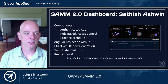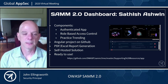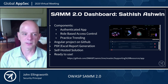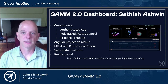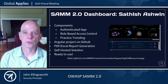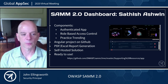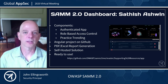The SAMM 2.0 dashboard was developed by Satish Ashwin. It's a SaaS application available at the link shown. It has its own local authentication with role-based access control. It includes a number of nice visualizations including practice trending, readiness factor, trends over time, and monthly trends. It's an Angular project hosted on GitHub under the OWASP project. It allows you to generate a PDF or Excel report for sharing within your organization. It is self-hosted — there isn't currently a public instance running — but it is ready to use if you'd like to stand it up within your organization.